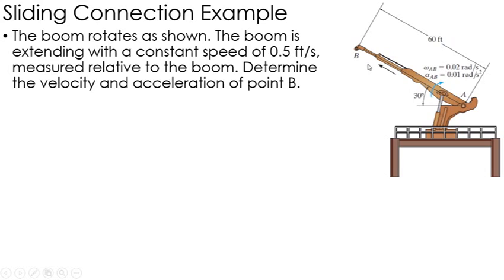So I want to determine the velocity acceleration of this point B, the total velocity acceleration. I'm going to use this equation with my sliding connection, again, because I have that relative velocity of B with respect to A. That is, B can move relative to A at a speed of 0.5 feet per second.